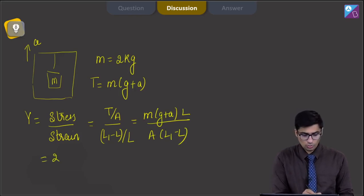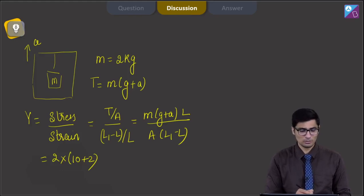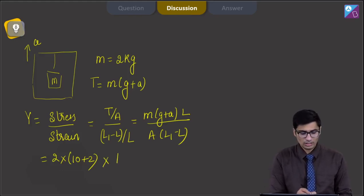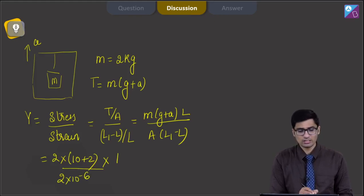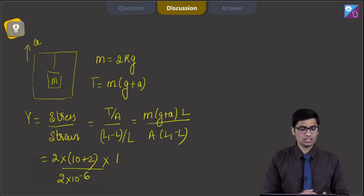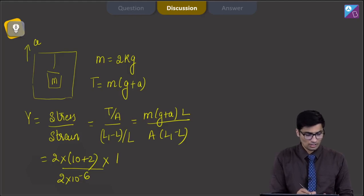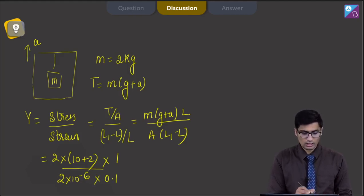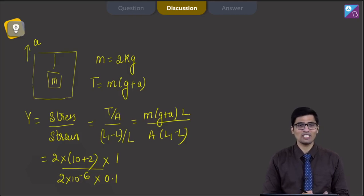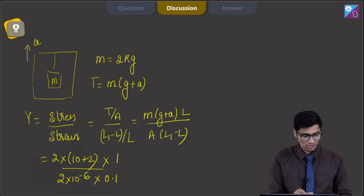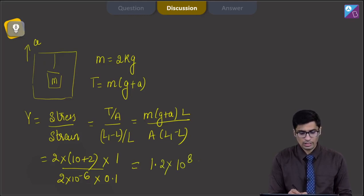This equals 2 × (10 + 2) × 1, divided by area 2 × 10⁻⁶ m² (note the area is given in millimeter square in the question). In the denominator it is multiplied by 0.1, as L₁ = 1.1 and L = 1. On solving, we get a value of 1.2 × 10⁸ Newton per meter square.